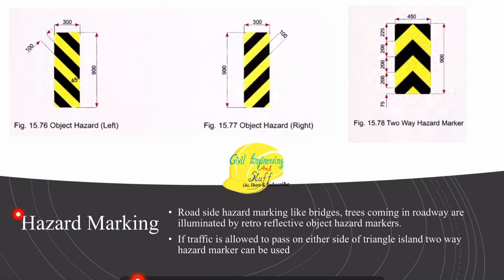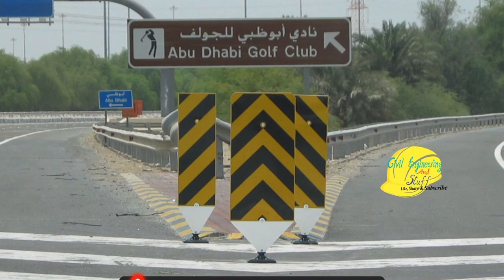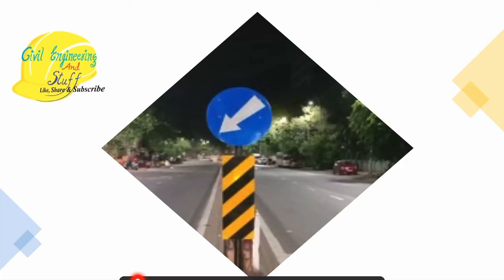Then we have hazard markings. These are located along bridges, trees, or any hazardous area. The purpose is to indicate restricted movement towards the direction in which the driver is moving. If the hazard is two-way, we can use a two-way hazard marker. If traffic is allowed to pass on either side of a traffic island, two-way hazard marking can be used. Example: if there is restriction on both sides of the road, a two-way hazard strip along with a one-way sign is installed.